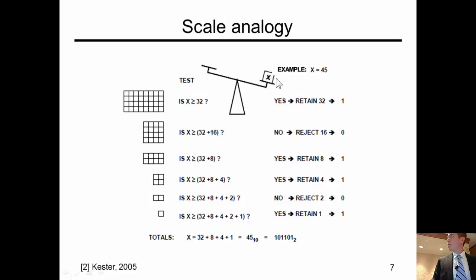So we have our unknown on the right side of this scale over here. Let's assume X is 45. The scale really is just a comparator that tells you which is bigger. So he's going to start with the biggest weight, 32. Put that on the left side and say, is X greater than or less than 32? In that case, X would be larger, so he's going to keep that weight. He's going to retain the 32. And next trial would have the 32 plus the next half down weight, or 16. 32 plus 16 is 48.